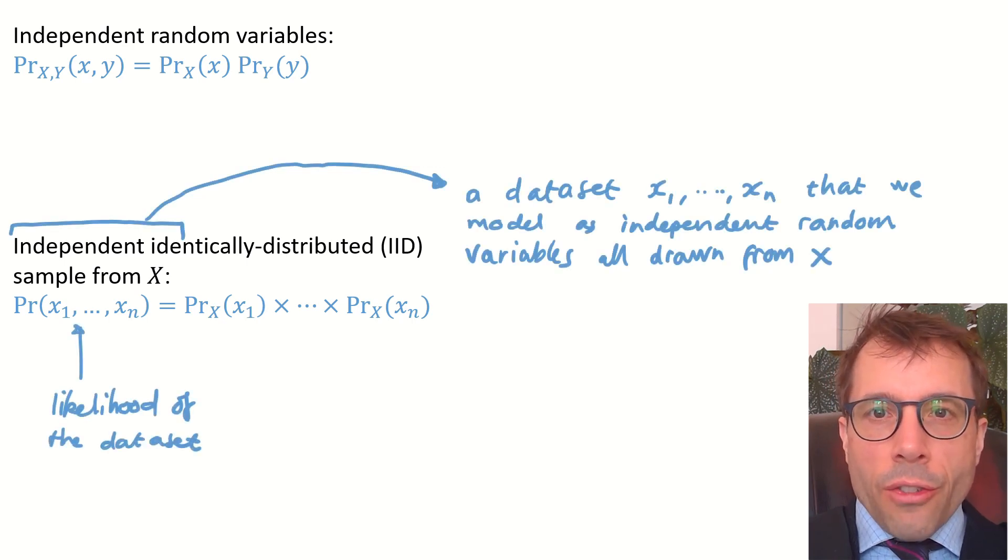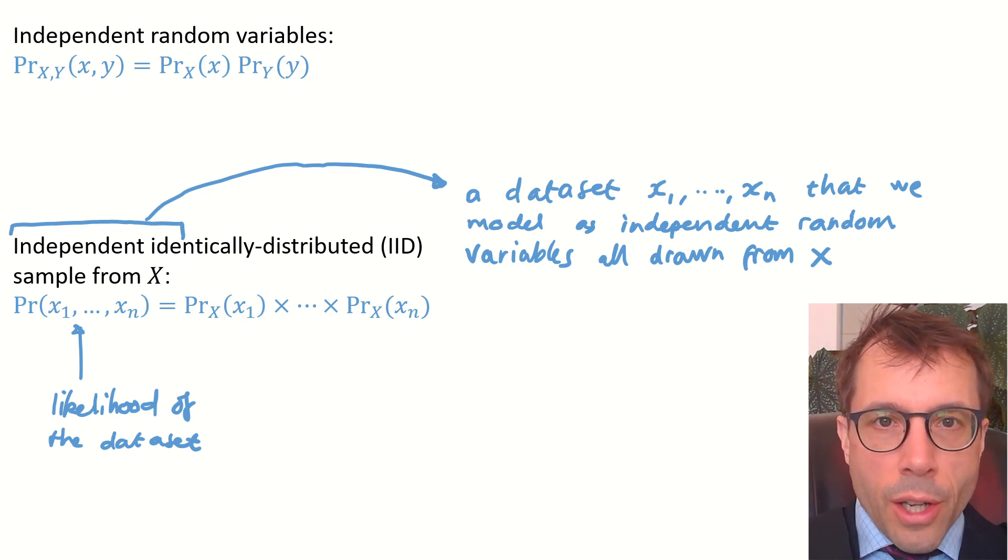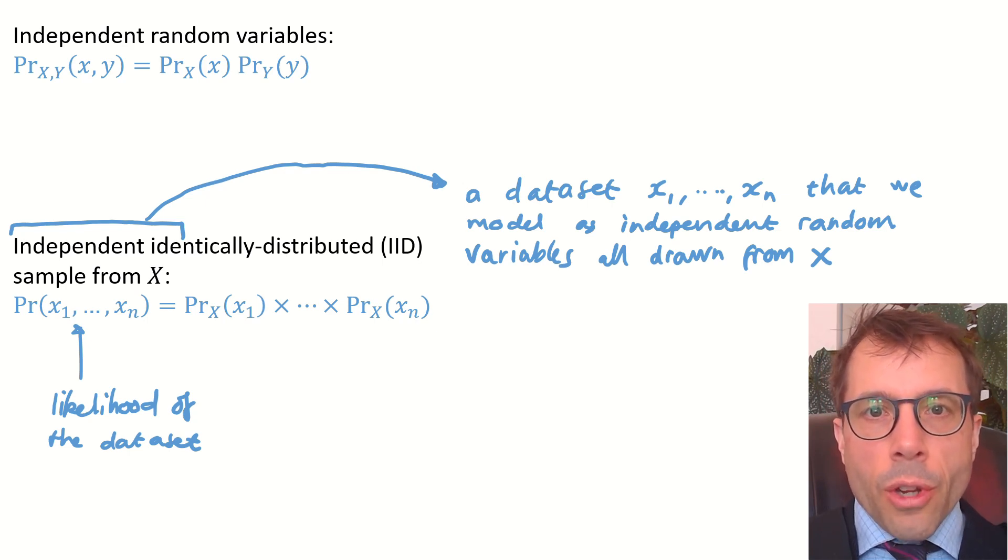Let's suppose we have a data set and we've chosen to model it as a collection of independent random variables all drawn from the same distribution. Let's call it X. Then the likelihood of the entire data set is just the product of the likelihoods of each of the individual terms.